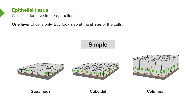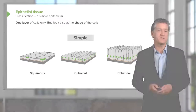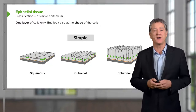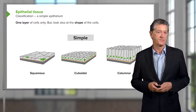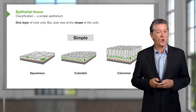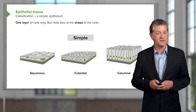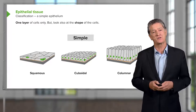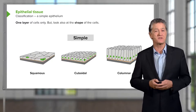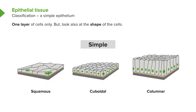Let's look at how epithelium is classified. First, decide how many cell layers make up the epithelium. If there's only one cell layer, we call it a simple epithelium. Then we look at the shape of the cells. If cells are much wider than tall, it's a simple squamous epithelium. If height, width and depth are about the same, it's simple cuboidal. If height is far greater than width and depth, it's a simple columnar epithelium.